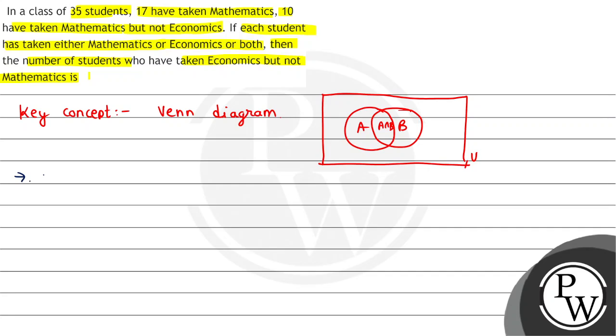So what we have here, let M be students who have taken mathematics. And we have that 17 students took mathematics, and students who took mathematics but not economics is 10.